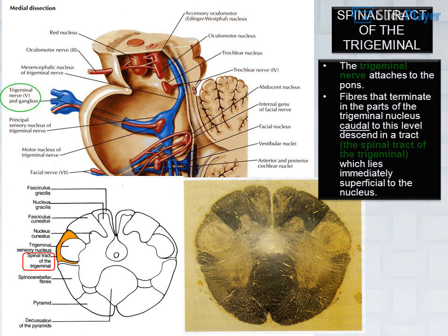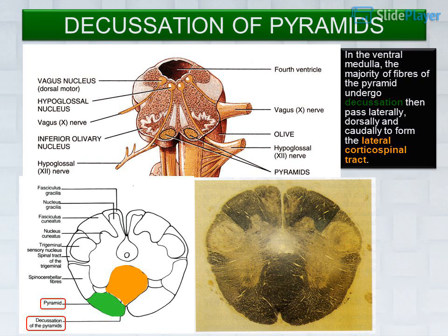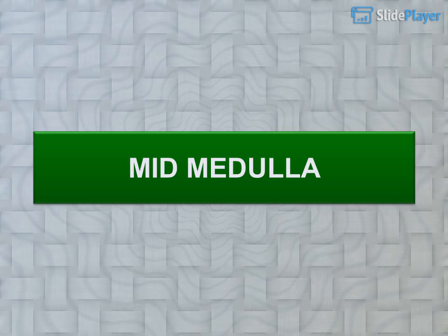Decussation of pyramids: in the ventral medulla, the majority of fibers of the pyramid undergo decussation — crossing — then pass laterally, dorsally, and caudally to form the lateral corticospinal tract.